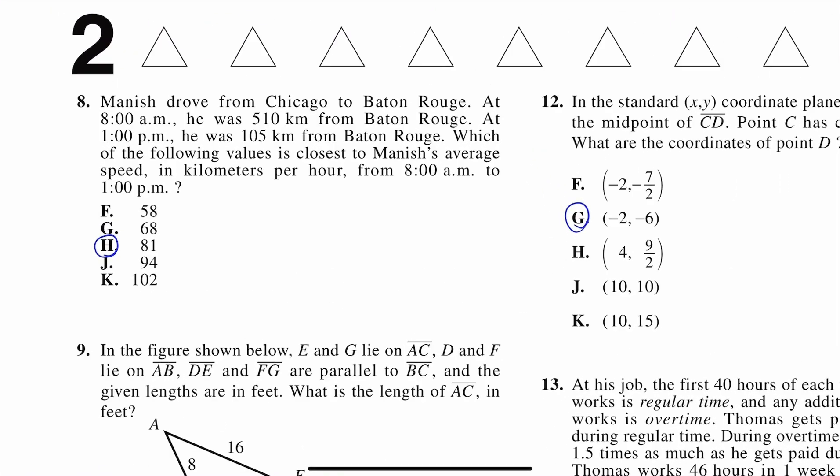Number eight says Manish drove from Chicago to Baton Rouge. At 8 a.m., he was 510 kilometers from Baton Rouge. At 1 p.m., he was 105 kilometers from Baton Rouge. Which of the following values is closest to Manish's average speed in kilometers per hour from 8 a.m. to 1 p.m.? And once again, as you see, I have all the circles answered. That's from the ACT's answer key, so we're making sure we're getting the correct answer at the end.